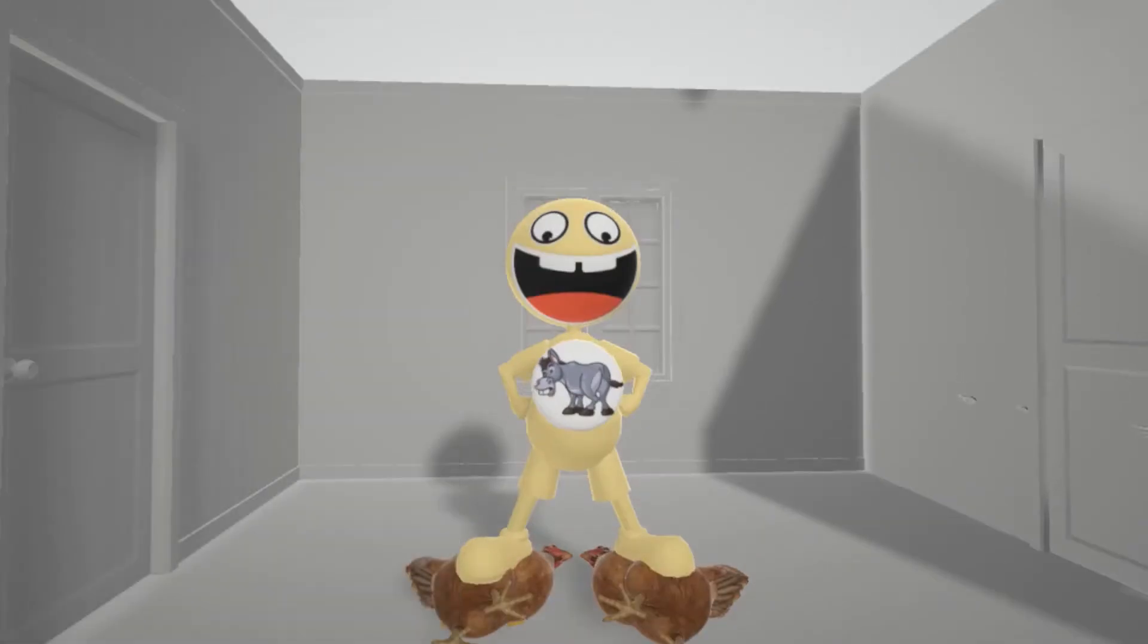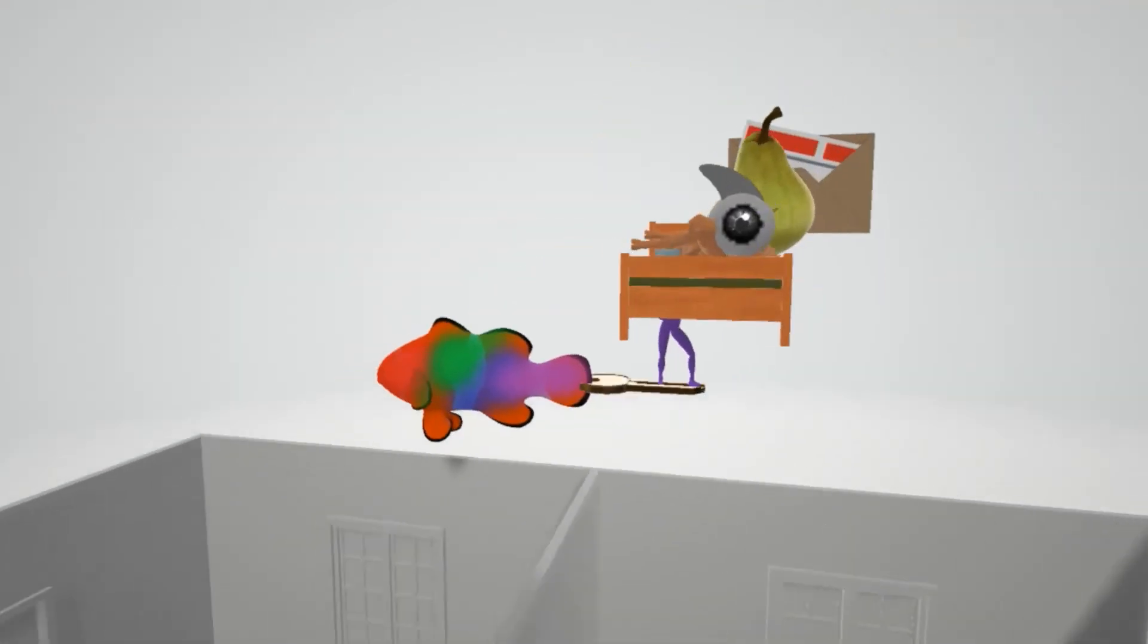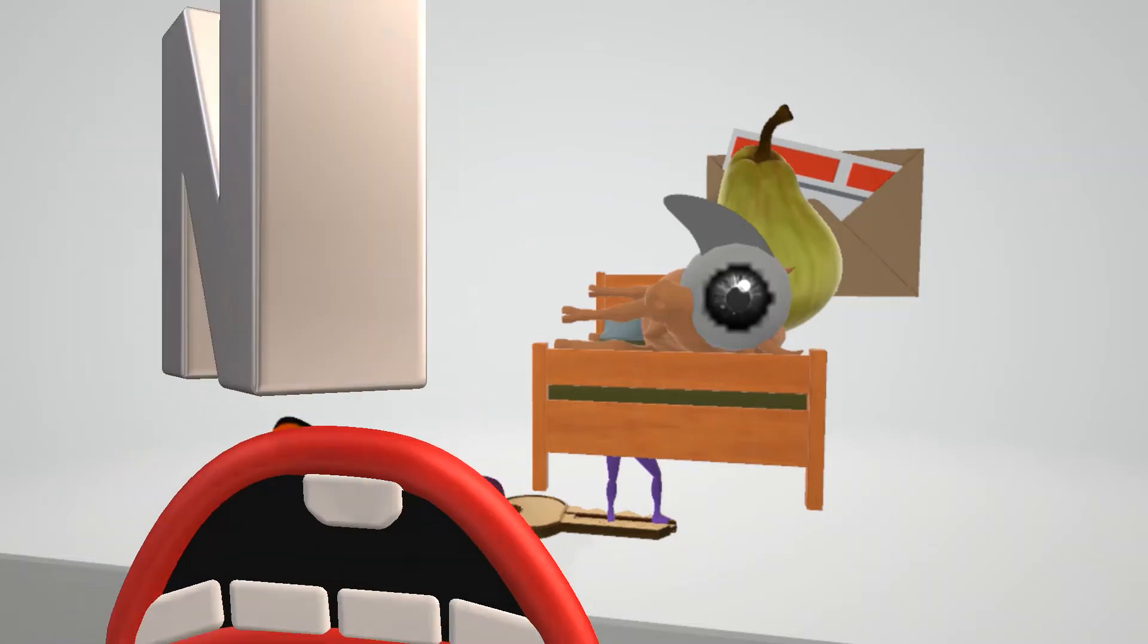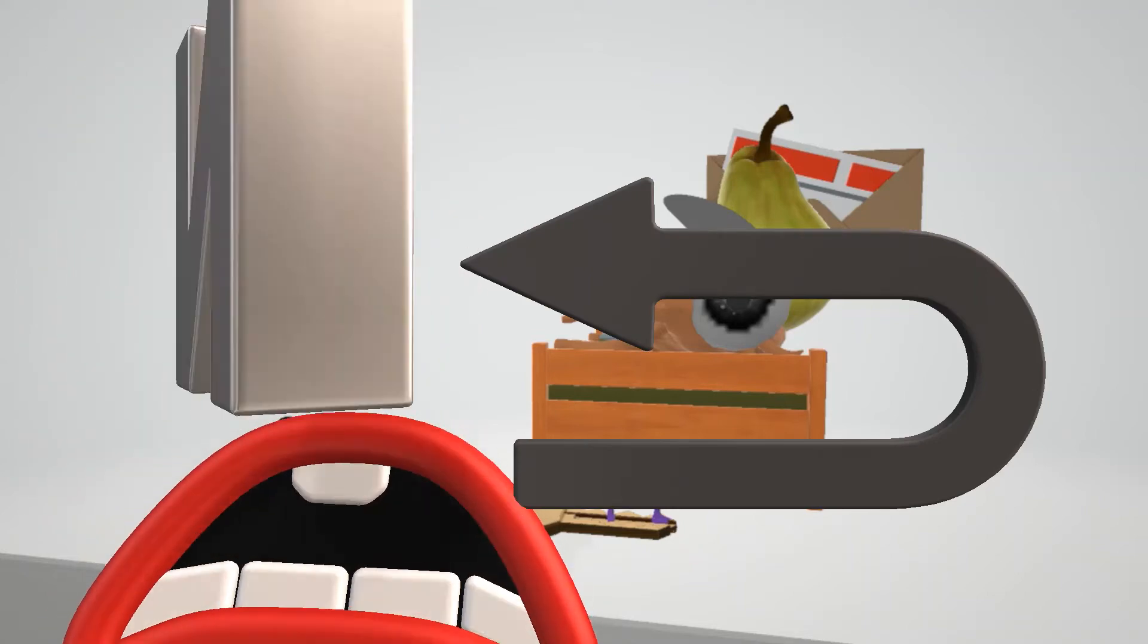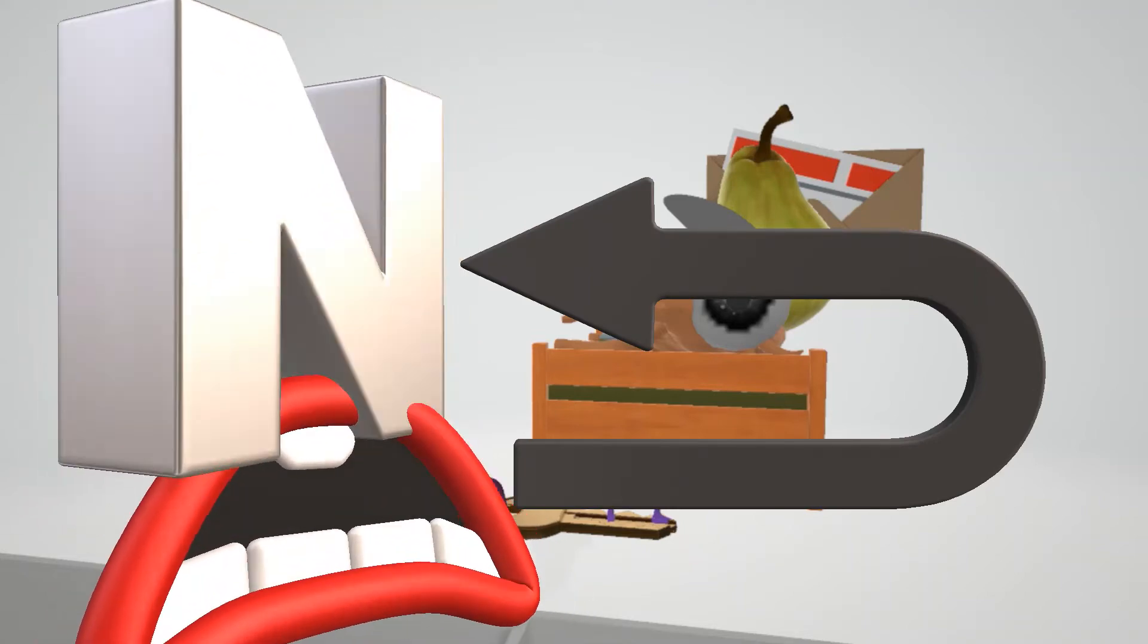In this video, we're going to talk about the NSAIDs which reversibly inhibit COX-1 and COX-2. And that's going to be represented by this reverse arrow by the N that's sad. N that's sad for NSAID, and the reverse arrow for reversible inhibition.